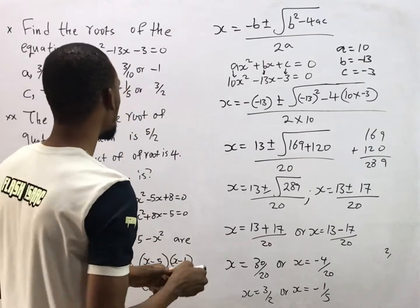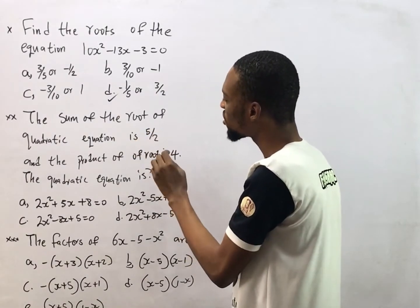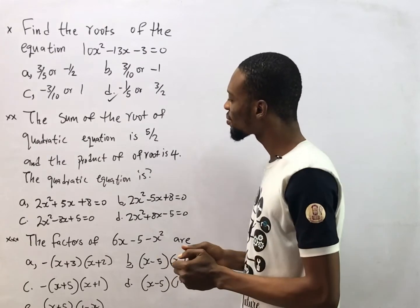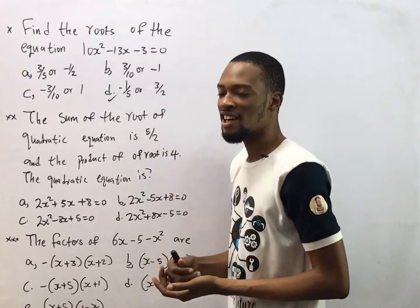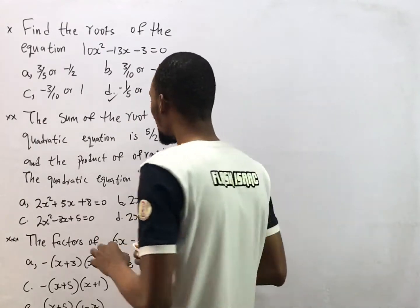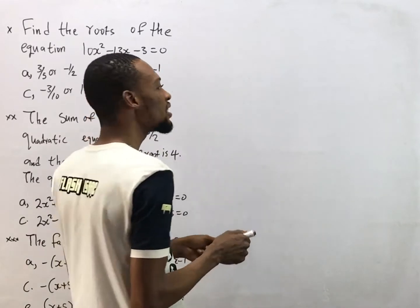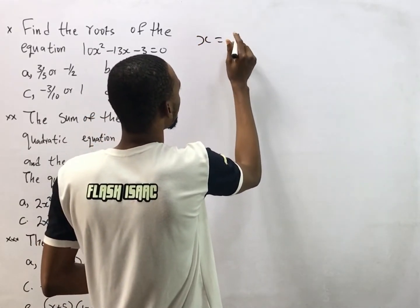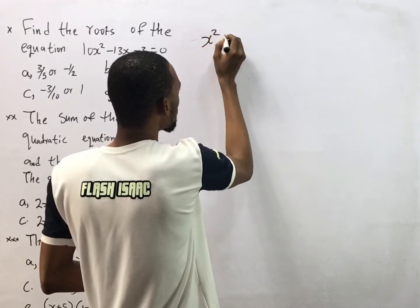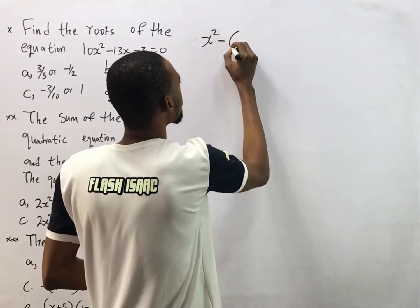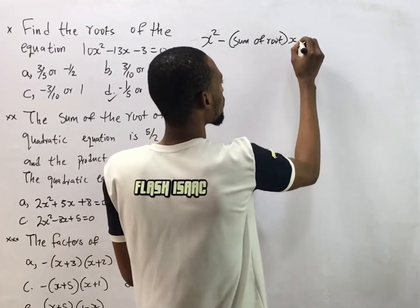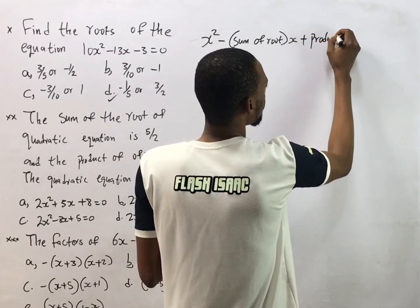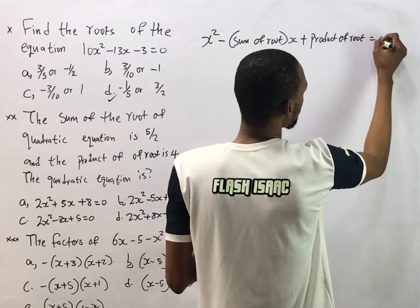So the roots are s equals 3 over 2 or s equals negative 1 over 5, and the answer is option D. The second question says: the sum of roots of the quadratic equation is 5 over 2 and the product of roots is 4 — what is the quadratic equation? The formula for forming a quadratic equation from its roots is: s squared minus (sum of roots) times s plus (product of roots) equals zero.